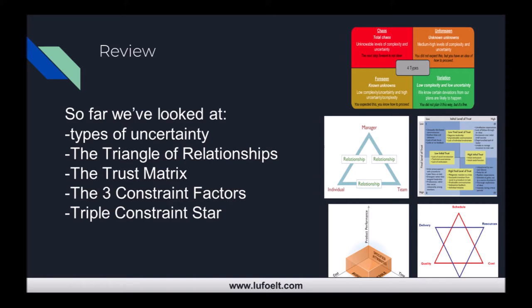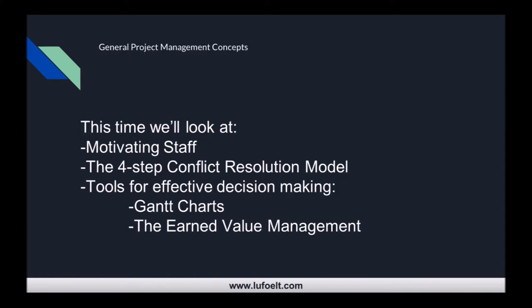We've also looked at the triple constraint star to understand how to make paradoxical decisions with those three constraint factors in mind. Today we're going to look at motivating your employees, conflict resolution using the four-step conflict resolution model, and then tools for effective decision making — the Gantt chart and earned value management.